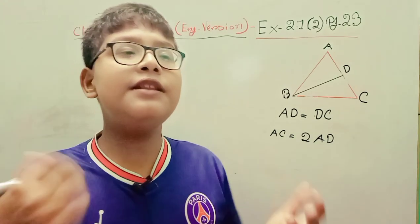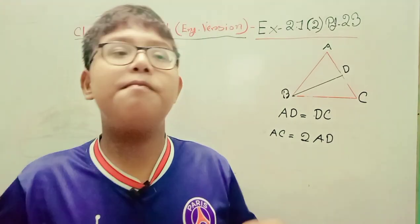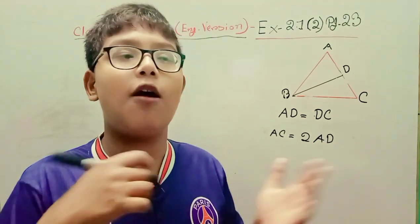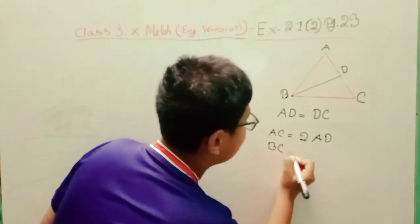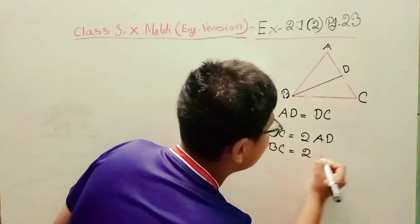Again, in the question it is said BC is twice the length of AD. Therefore, BC equals 2 times AD.